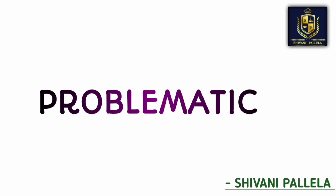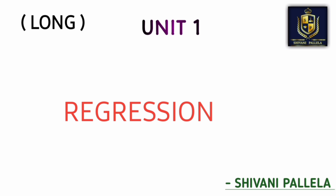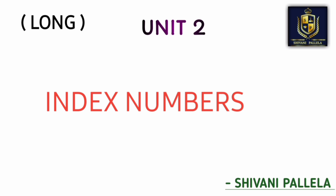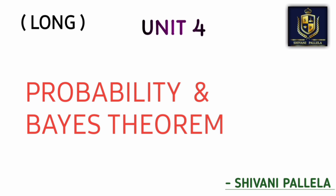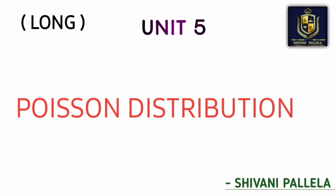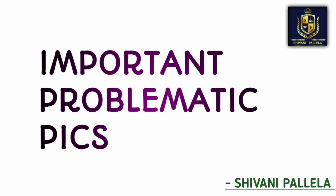Now we will discuss problematics. From Unit One: Regression method. From Unit Two: Fisher Index, Marshall Index, and different types of index numbers. From Unit Three: Moving Averages — two, three, five, and seven years. From Unit Four: Probability and Bayes' Theorem. From Unit Five: Poisson Distribution. If you learn these five methods, it will be enough to score an O grade in Business Statistics Two.